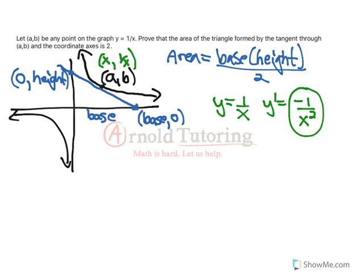So we need everything in terms of X, and we've got to show that this area equation, no matter what the point we choose is, will equal 2. That's what we need to show. So what I'm going to do is I'm going to use the fact that I know through calculus the slope of the line must be negative 1 over X squared.